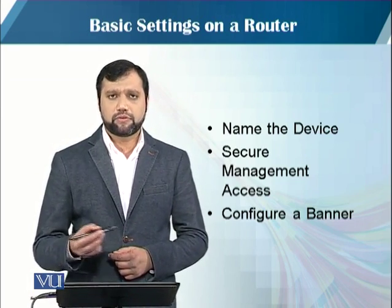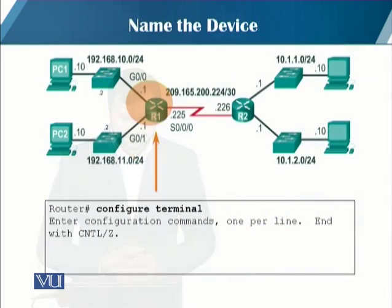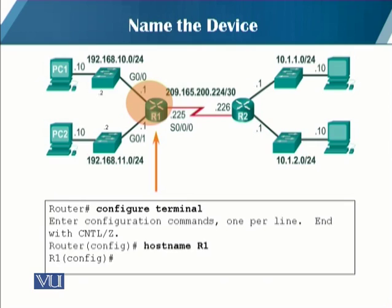Now let's look into the first task: naming the device. The first command you perform is 'configure terminal', which enters you into configuration mode. Then you write the command 'hostname R1', naming the router R1. Here, 'hostname' is the keyword and 'R1' is the value.